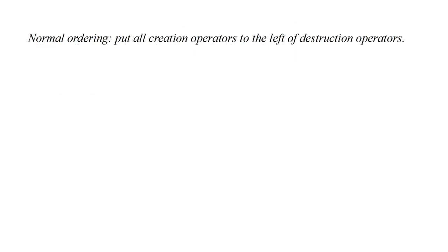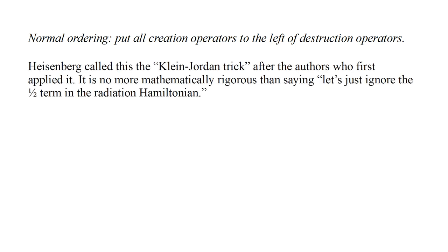Normal ordering is the convention that we put all creation operators to the left of destruction operators, without regard to commutation relations. This is a trick that avoids the embarrassing infinities we have encountered so far. Heisenberg called this the Klein-Jordan trick, after the authors who first applied it. It is important to note that this is no more mathematically rigorous than simply saying, let's just ignore the one-half term in the radiation Hamiltonian.